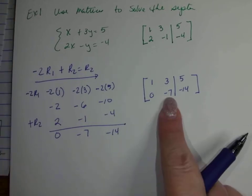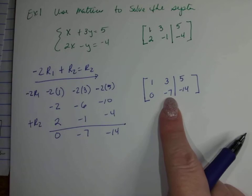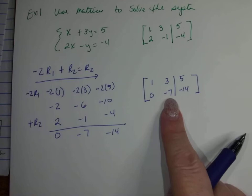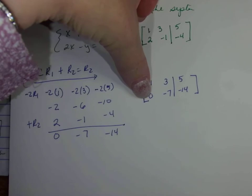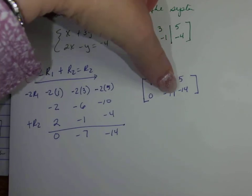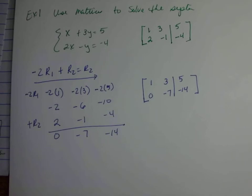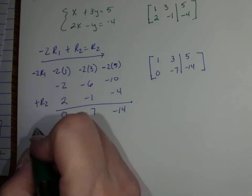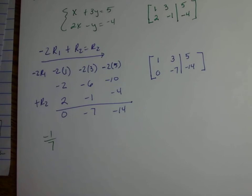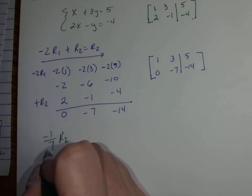Now this position in row 2 needs to become a 1. How do I get negative 7 to be a 1? If I divide by negative 7, that gets me 1. But since we need to multiply rather than divide, I'll multiply by negative 1 over 7 — that's the same as dividing by negative 7 — times row 2 to get my new row 2.